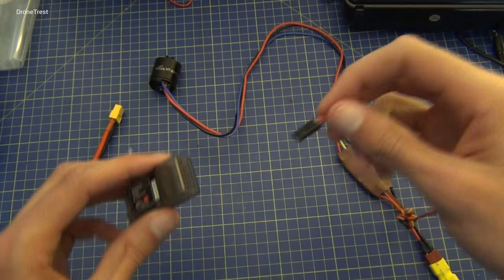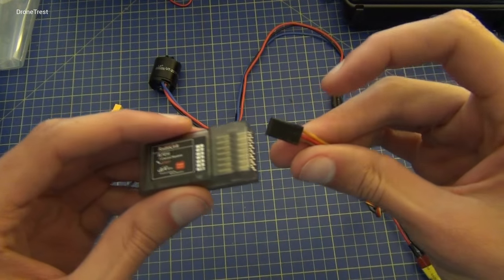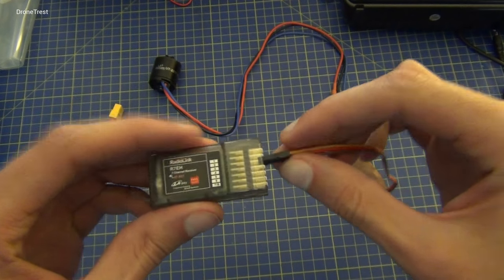So we first plug the ESC into the receiver making sure to plug it into the throttle port, this is port 3 in this case.